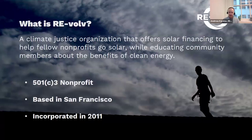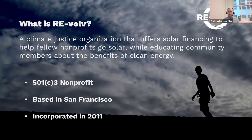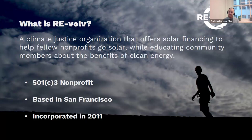A little bit about Revolve: we are a climate justice nonprofit organization based in San Francisco, started in 2011. What we do is help other nonprofits go solar. Nonprofits have faced historical challenges getting their solar projects financed, so we provide financing to organizations that want to go solar. At the same time, we educate community members about the benefits of solar — this speaks to the difference between the passive influence of the seeding effect and that active interaction.